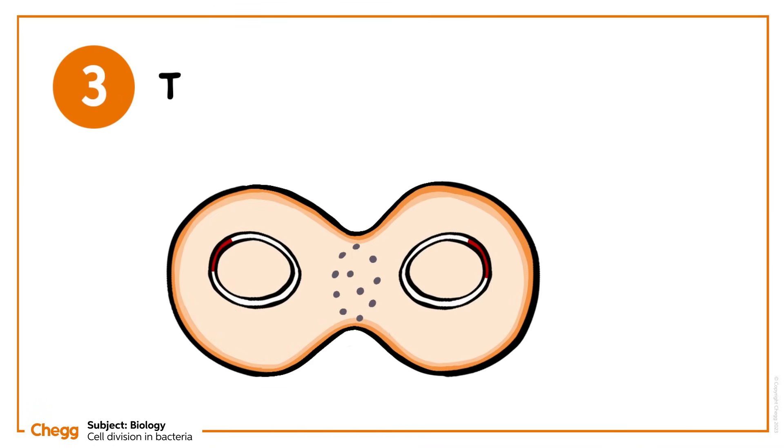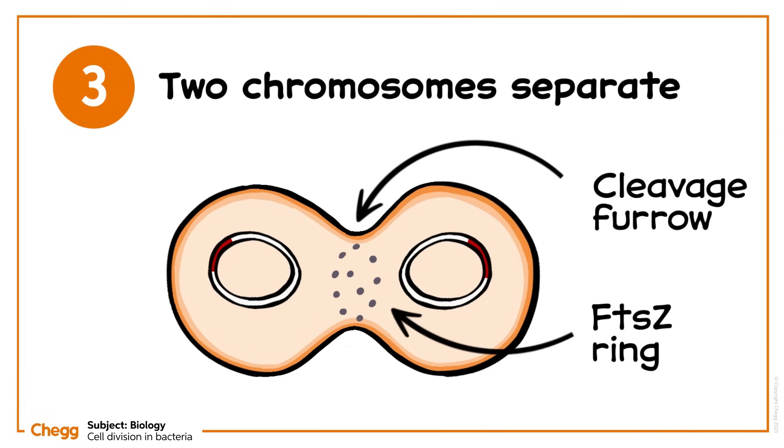In the third step, the two chromosomes separate and migrate to opposite ends of the cell. Those FtsI proteins form a ring around the midpoint of the cell. This ring, known as the Z-ring, serves as a scaffold for division machinery to assemble, including a complex of proteins called the divisome.